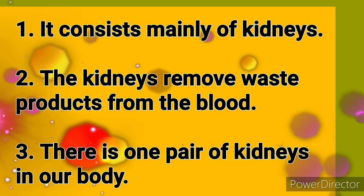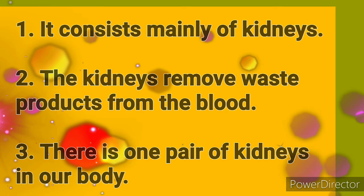There is one pair of kidneys in our body. They are supplied with blood vessels. The impure blood that enters the kidneys is filtered, and impurities are separated in the form of urine.